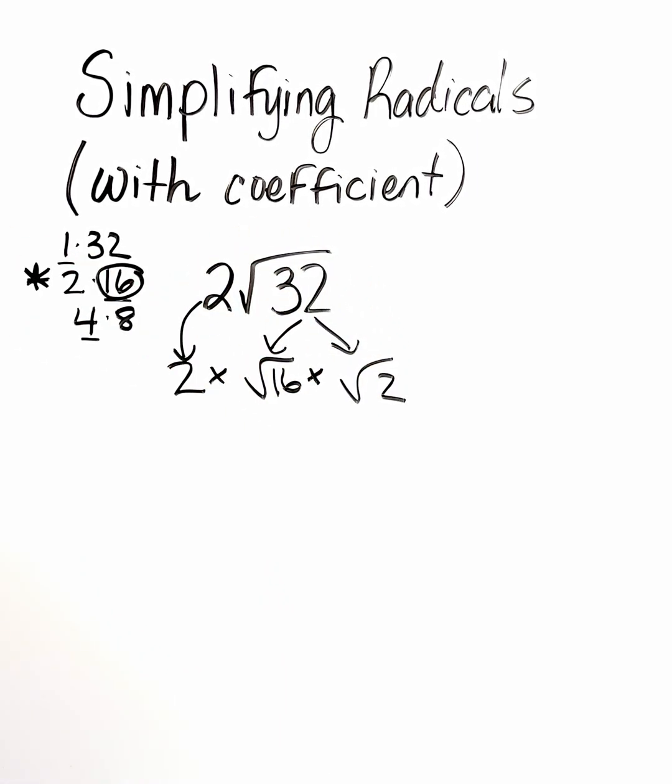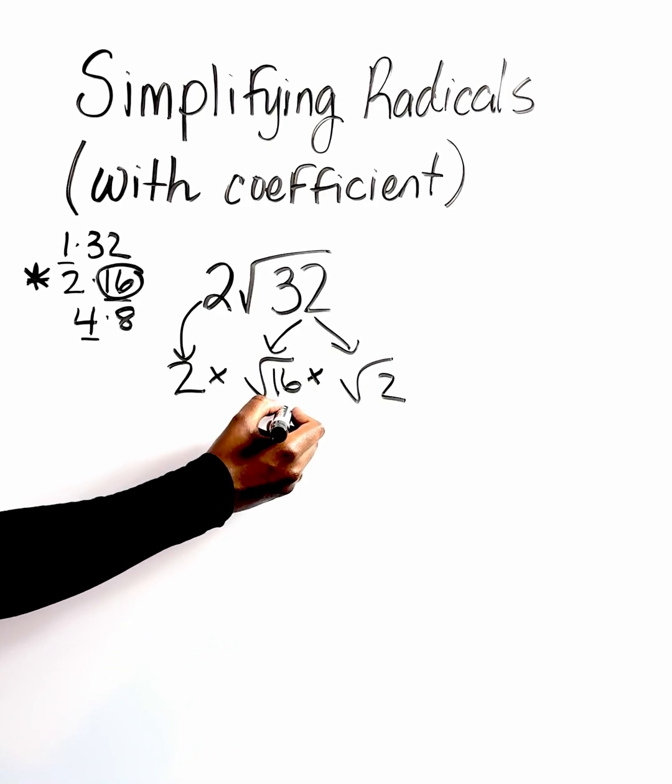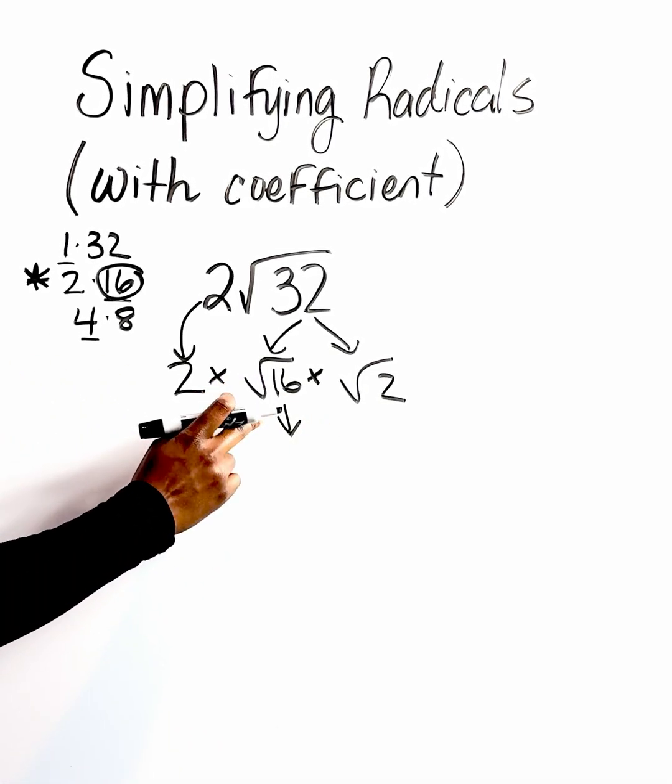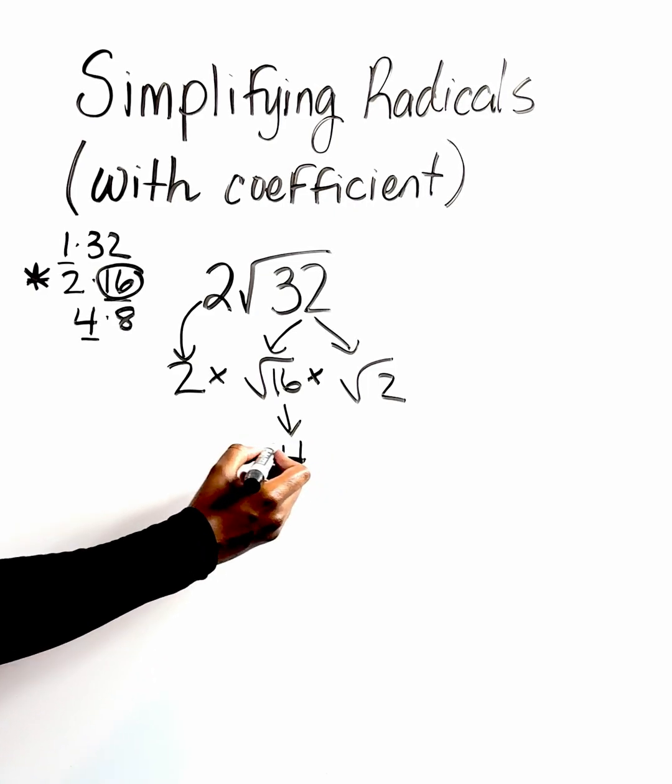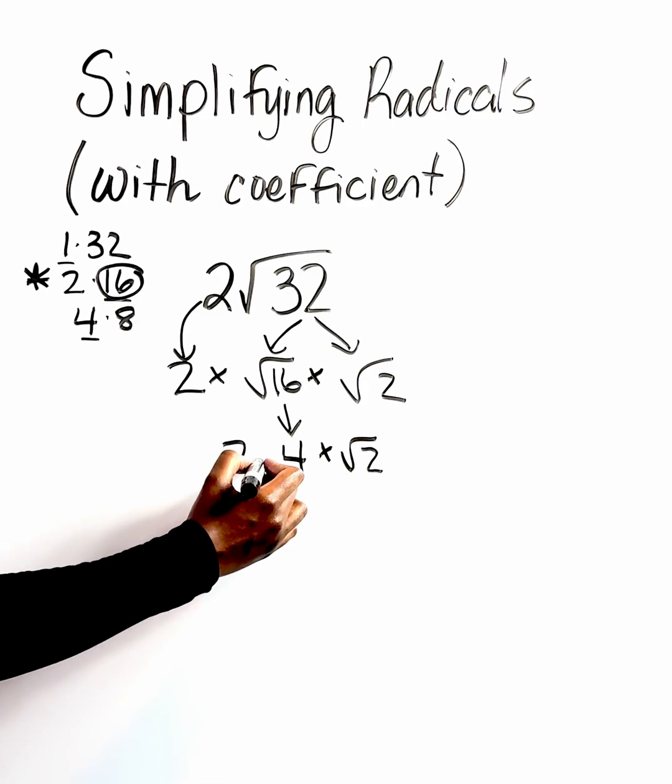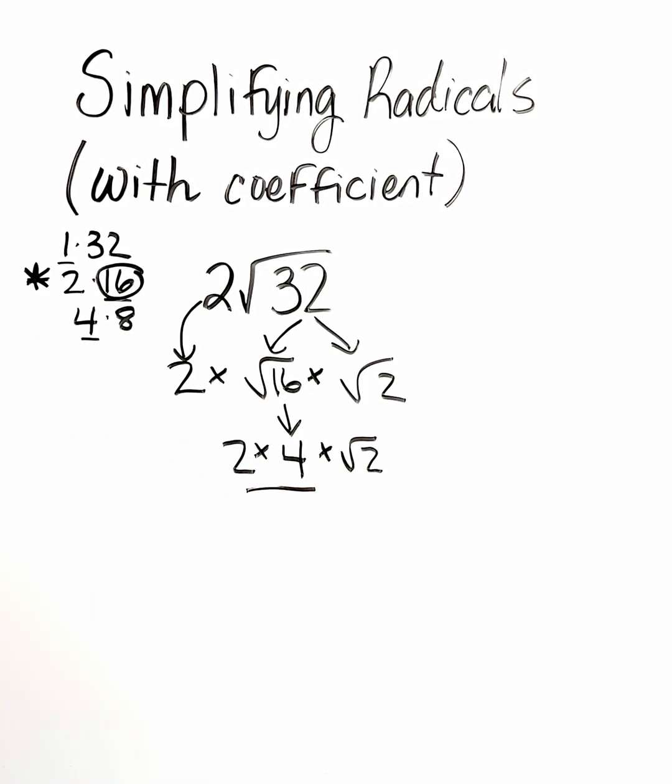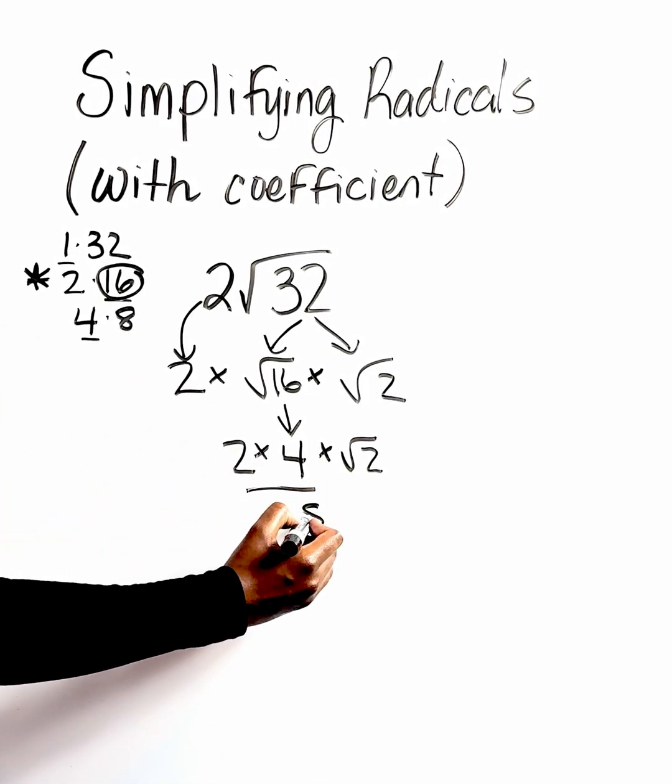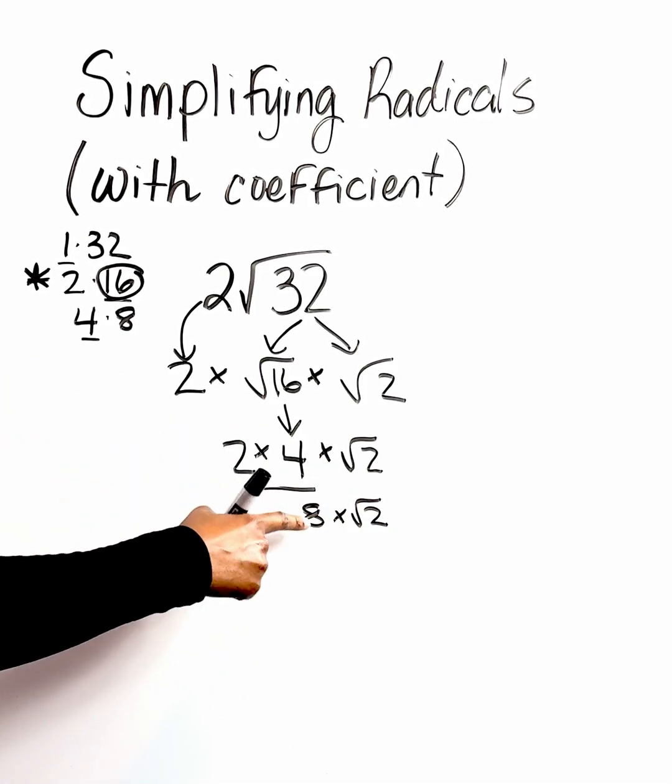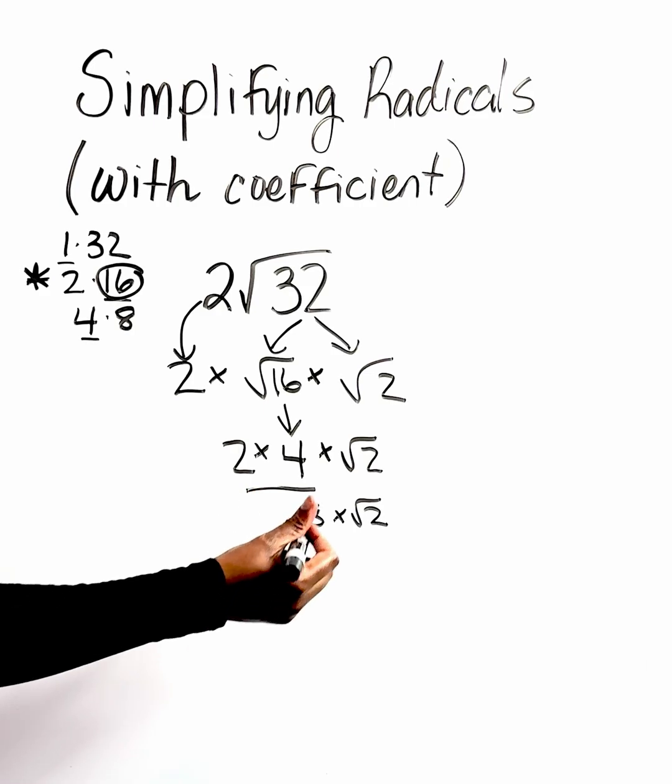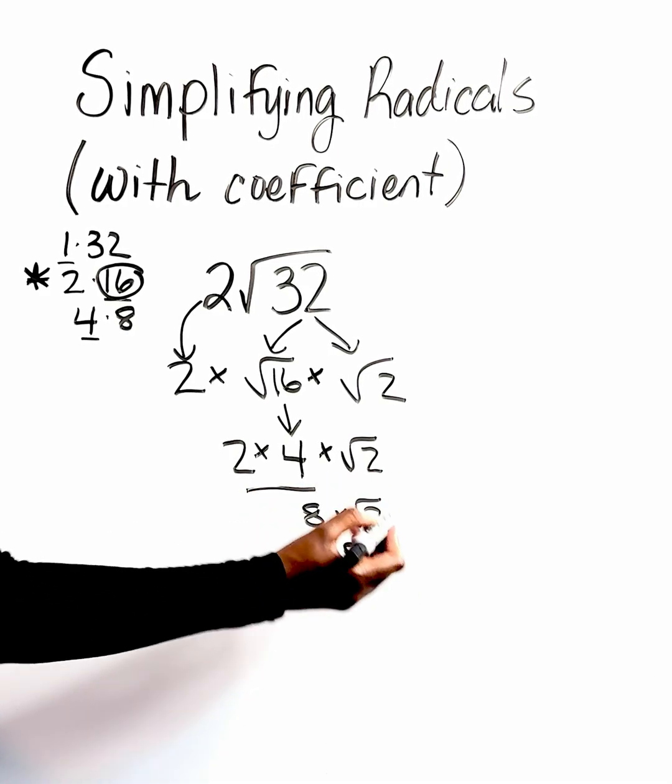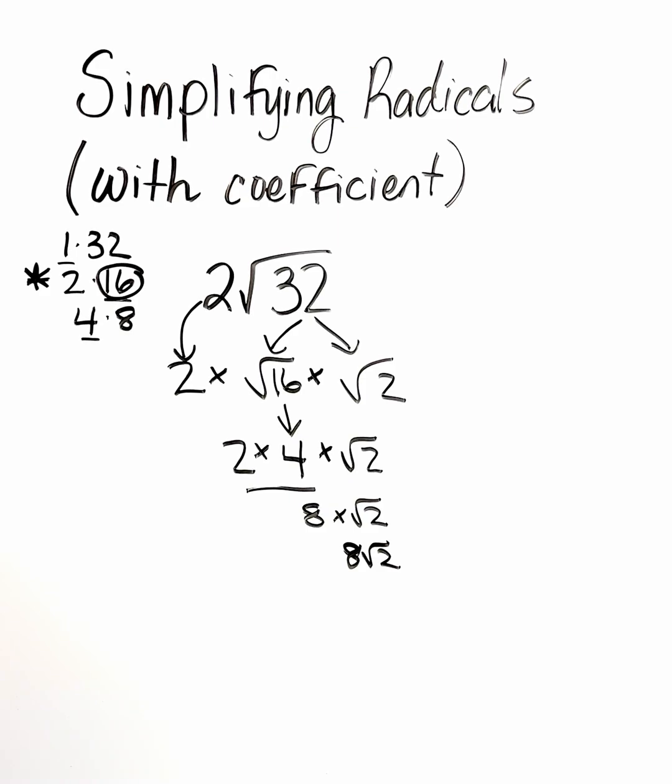And then from here, we're just going to simplify. So, of course, we're going to simplify our perfect square. We know that the square root of 16 is 4. We're going to bring everything else down. Now we're going to multiply here. Two times four gives me eight. We're going to say eight times the square root of two. And then we know anytime we have a number times a radical, we just stick them together. So eight times the square root of two is just eight root two. And that's it.